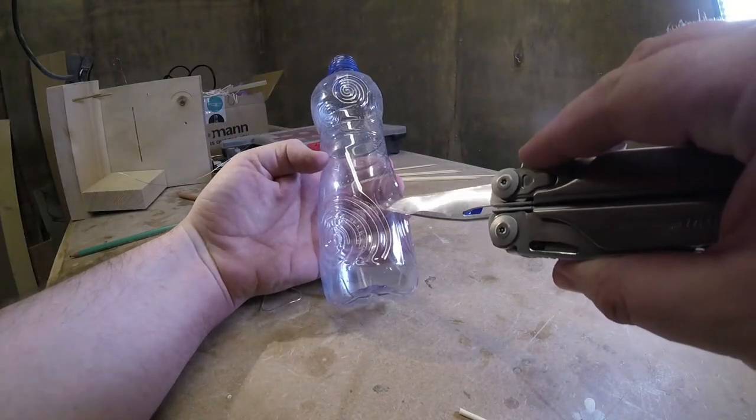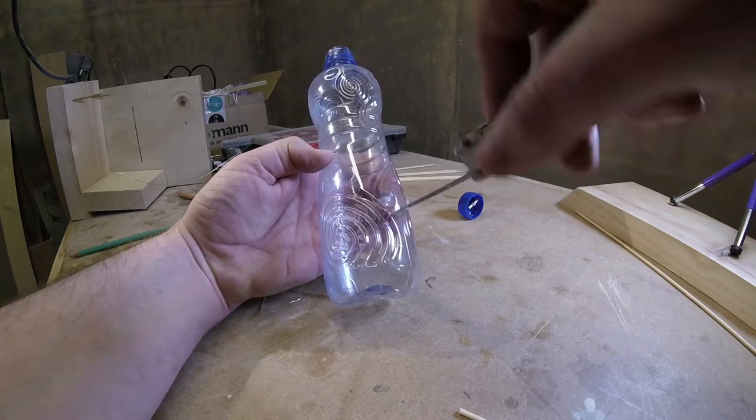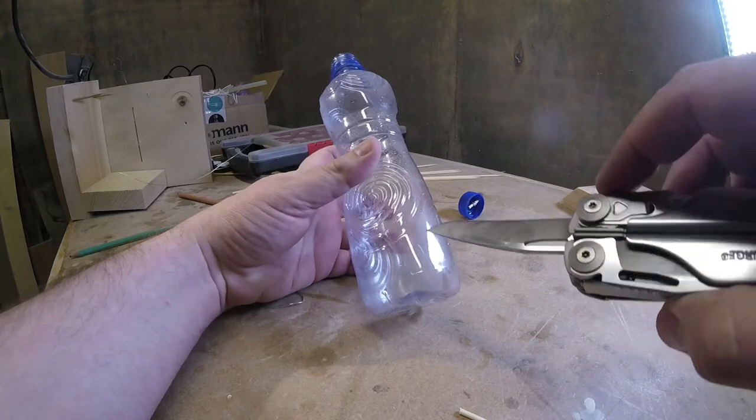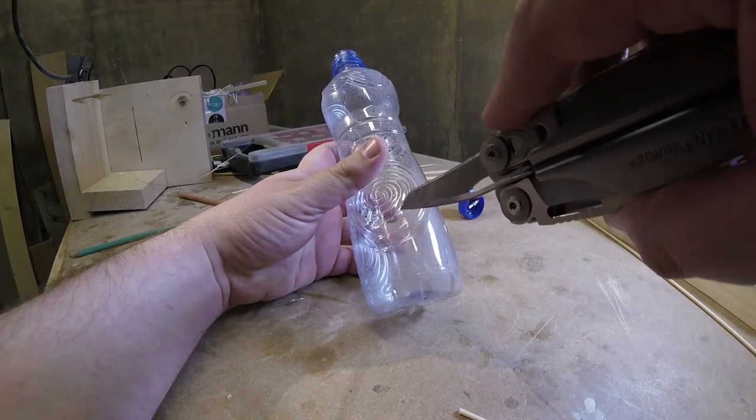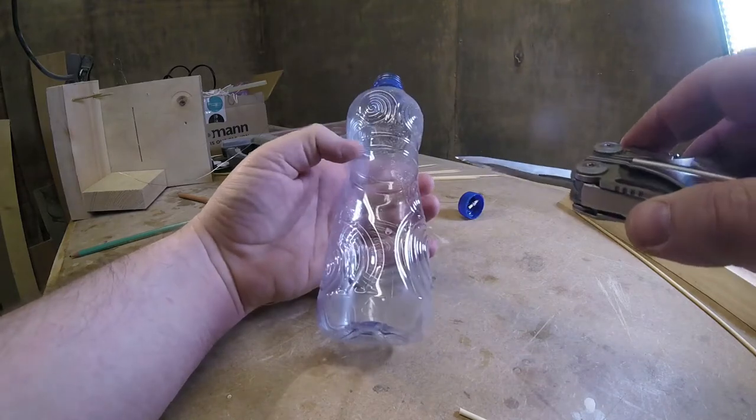Using the tip of the knife, poke two holes straight across from each other in the top and the bottom of the bottle. This is where you'll pass the bamboo skewer through to act as a perch for the birds that come to feed at the bird feeder.